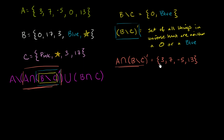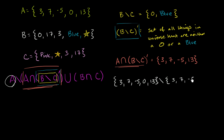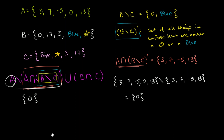Now we want to find the relative complement of this business in A. So A is {3, 7, -5, 0, 13}, and we're taking the relative complement with {3, 7, -5, 13}. We start with A and take out all the stuff in that set: we take out 3, take out 7, take out negative 5, and take out 13. So we're just left with the set that contains 0. All of this business has simplified to a set that only contains 0.